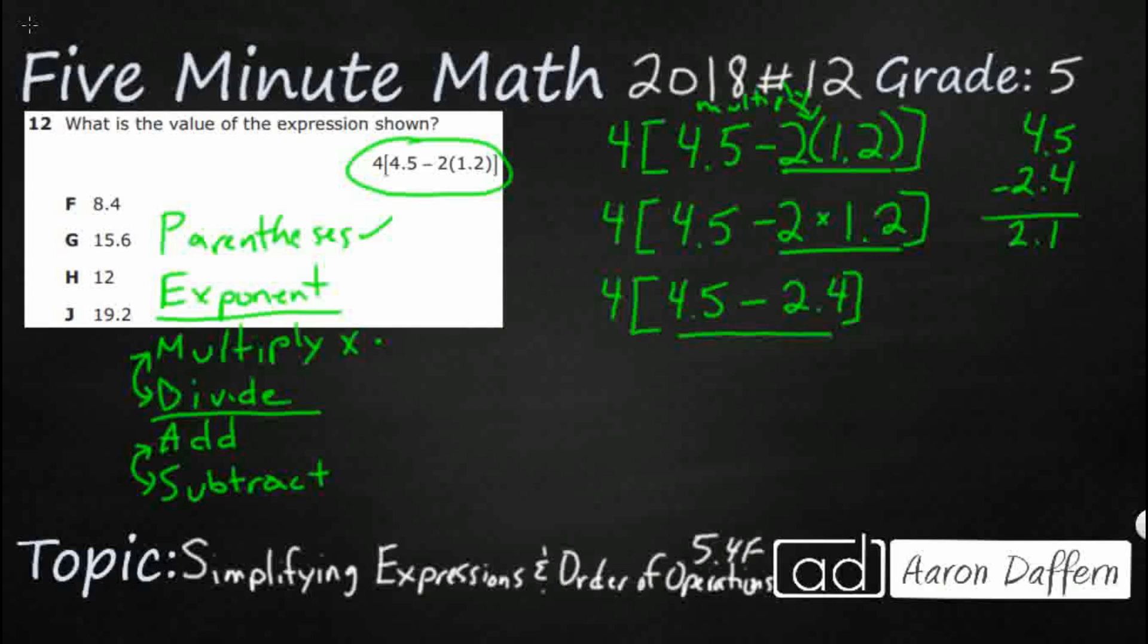So we're going to simplify this right here, we're going to say 4 bracket 2.1. Now just like this right up here signified multiplication, that's what this is signifying right here, we've got to multiply right here.